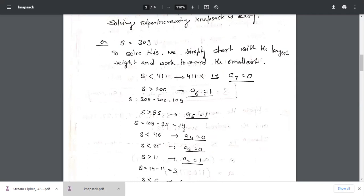Then again we will check 14 with 25, the next previous smallest number. It is also 14 is less than 25, so a3 should be 0. Then we will check with 11. S is greater than 11, so it should be considered. So a2 = 1. And now updated S value will be 14 - 11 = 3.